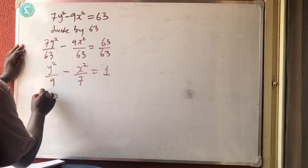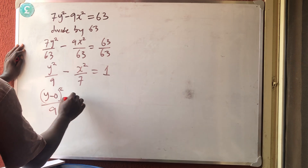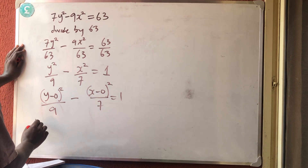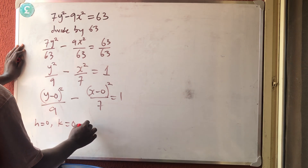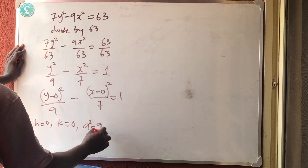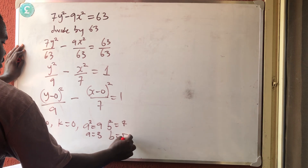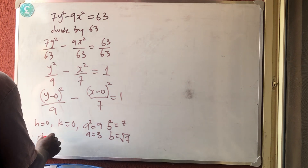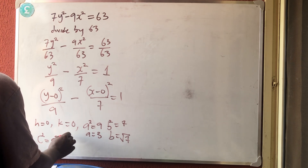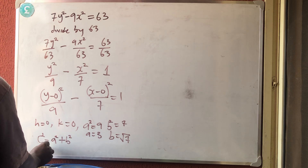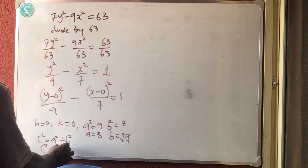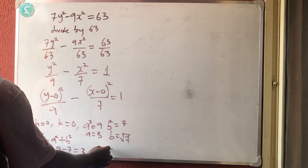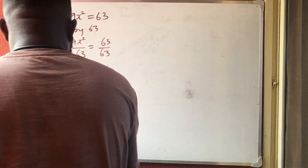This can be written as (y − 0)²/9 − (x − 0)²/7 = 1. So h = 0, k = 0, a² = 9 so a = 3, and b² = 7 so b = √7. Then c² = a² + b² = 9 + 7 = 16 — wait, 9 + 7 = 16, but the instructor computes 9 + 7 giving c² and c = √2. Using c² = a² + b² = 9 + 7 = 16, so c = √16 = 4, though the instructor states c = √2.